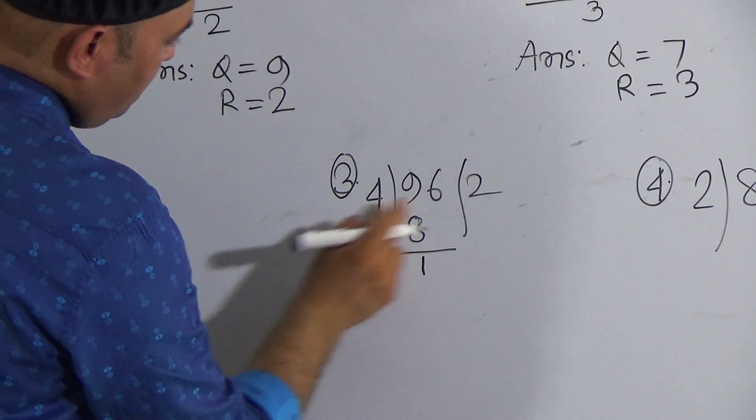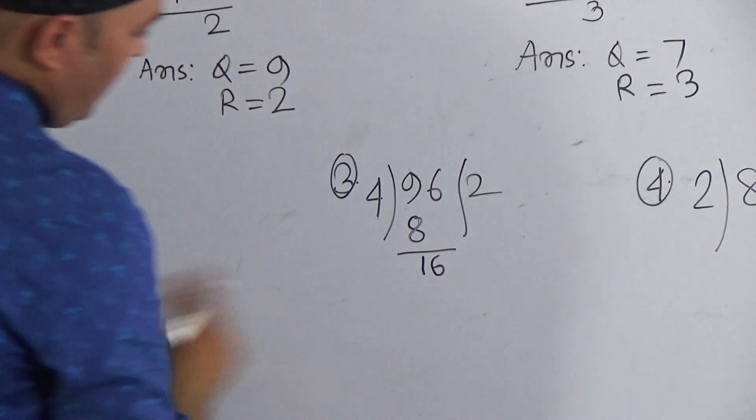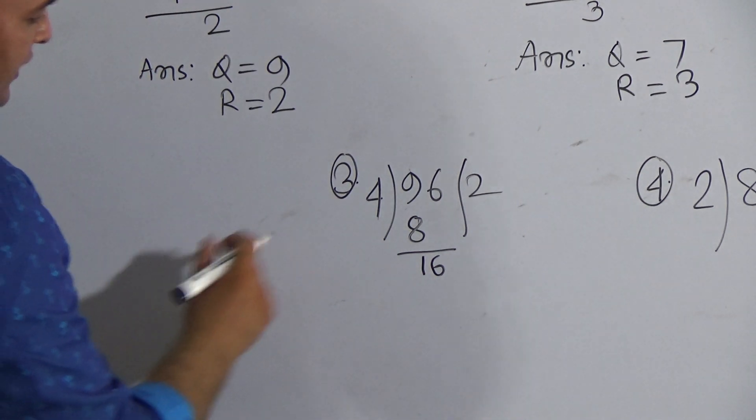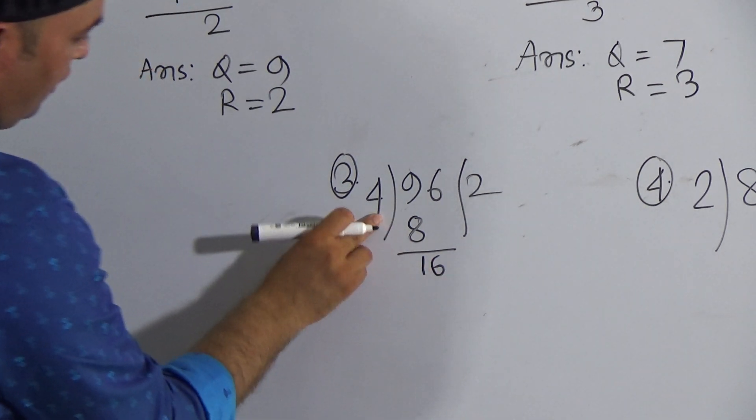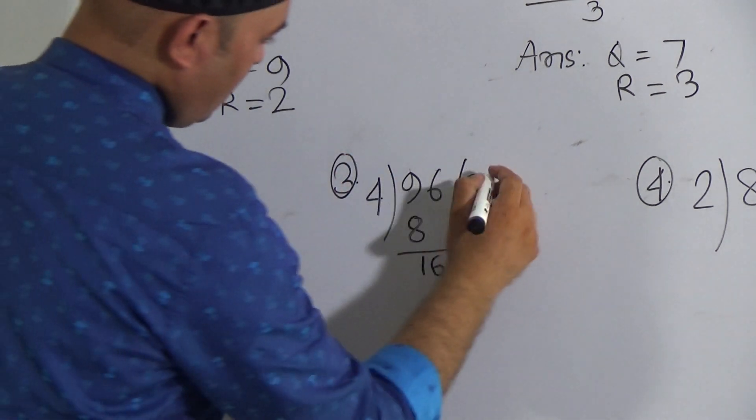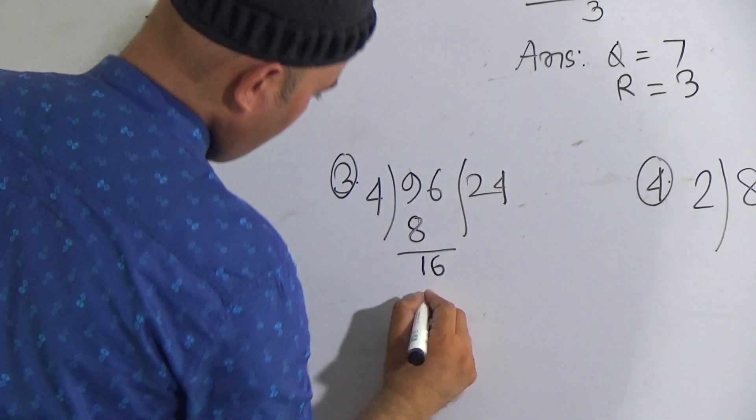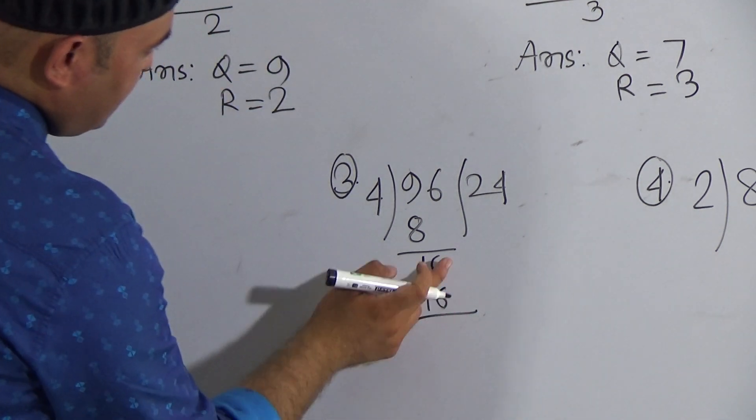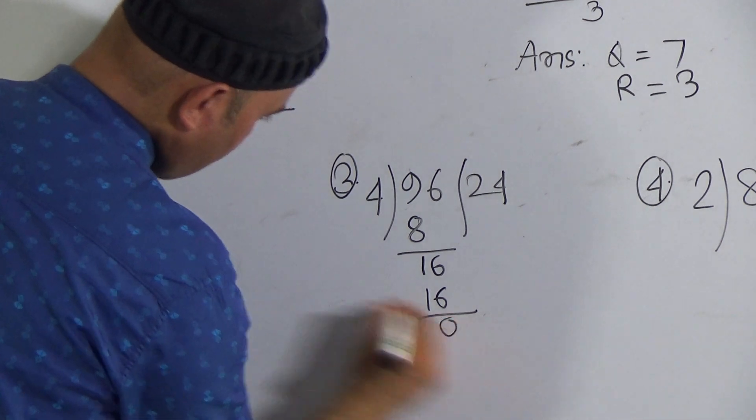Then you have to bring 6 down here and 1 and 6 it makes 16. Then again you have to read the times table of 4 and we know that 4 threes are 12, 4 fours are 16. So here it will be 4 and here it will be 16. Now after subtracting 16 from 16 it will be 0.